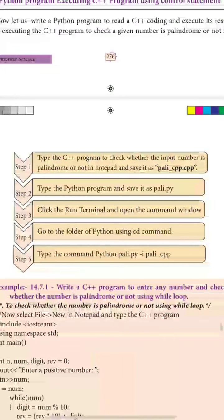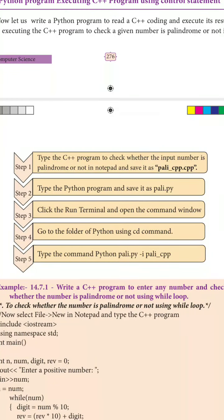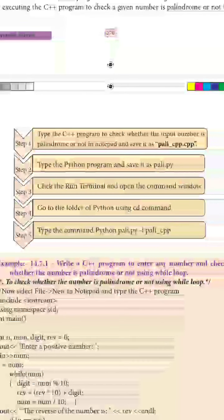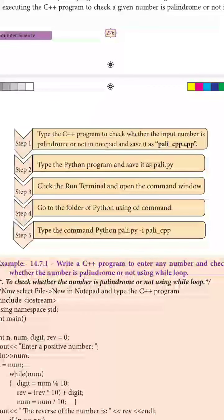Here you can see the steps that have to be followed when combining two programming languages. Step one: type the C++ program to check whether the input number is a palindrome or not in Notepad and save it as the file name. Step two: type the Python program and save it as the file name. Then click the run terminal and open the command window, go to the folder of Python using the cmd file and type the command 'python [python_program_file_name]'.